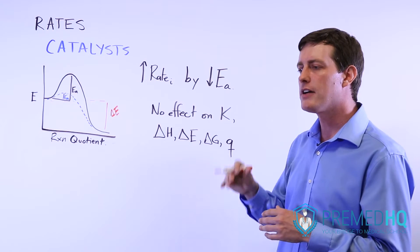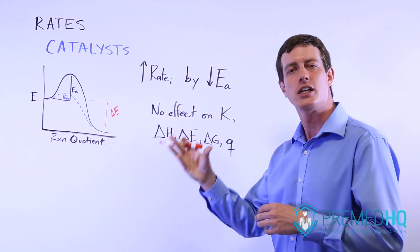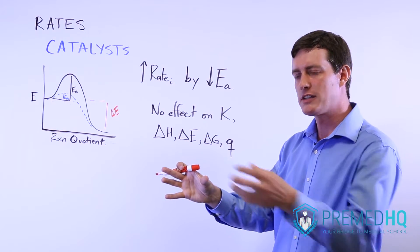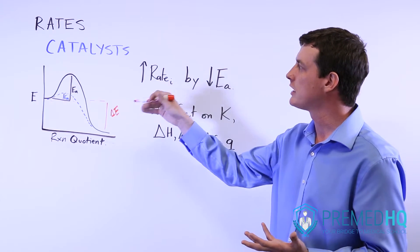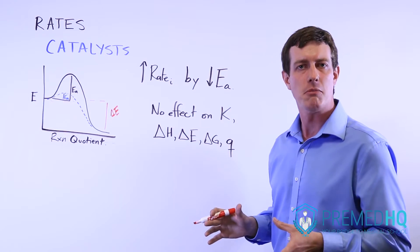And so if a catalyst does something like changing the orientation of a molecule, which makes it easier to react with, that's an example of how a catalyst works through the Arrhenius collision model.